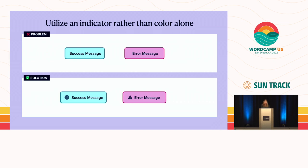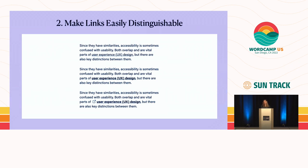Here's another example of utilizing an indicator rather than color alone. Someone who is colorblind will not be able to tell a success from an error message based on just color, so having an icon will make it so that they can. Number two: make links easily distinguishable. The underline method is great, but underline and bold is even better. And if your link is going to leave your site or open an external window, adding an icon can be very informative.